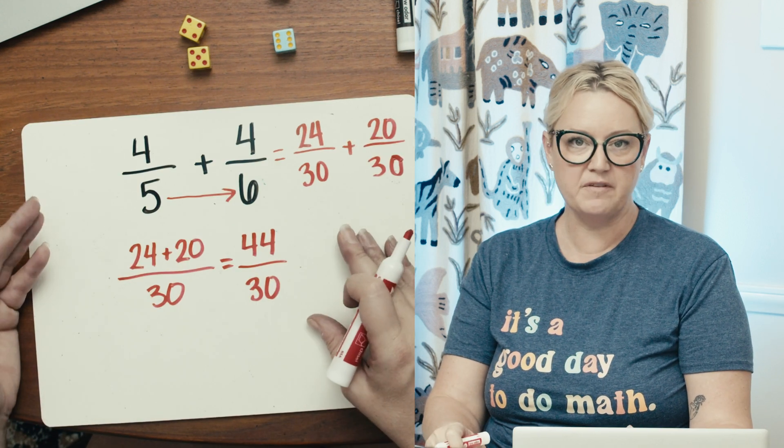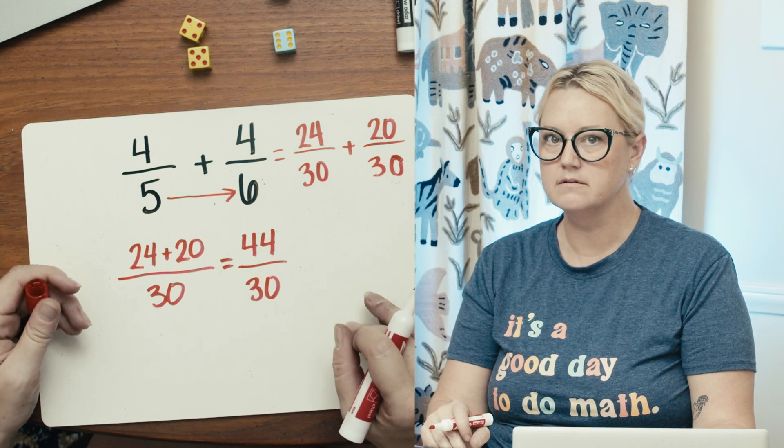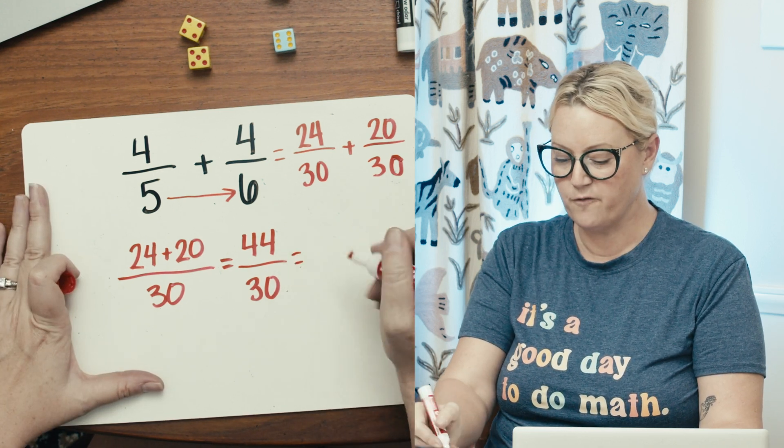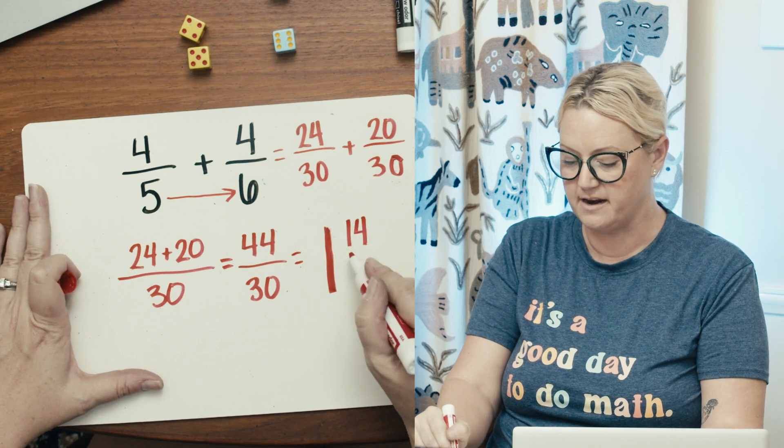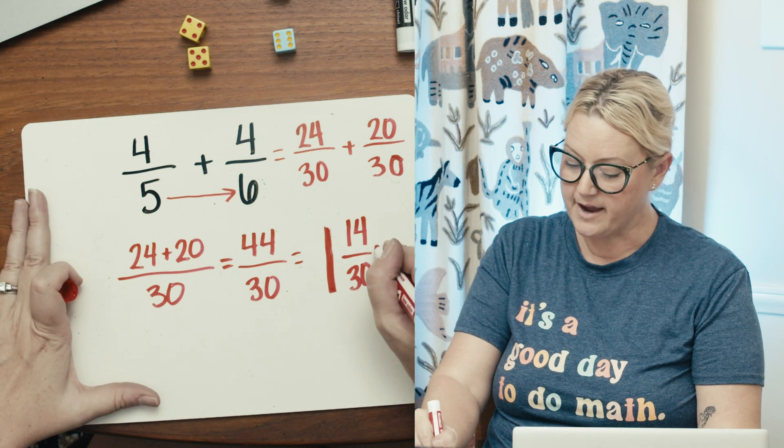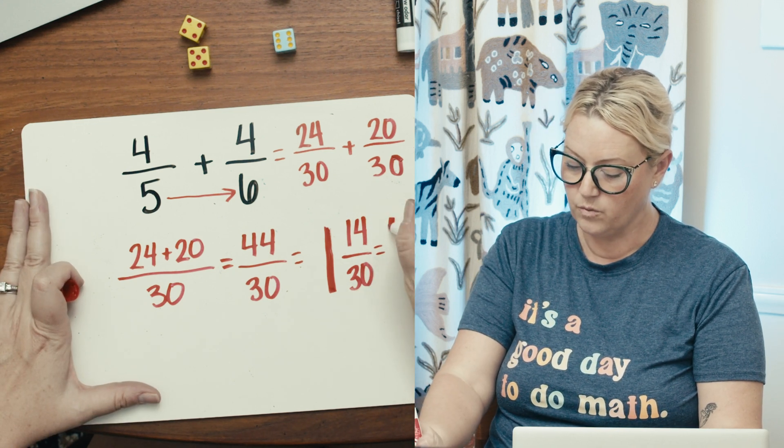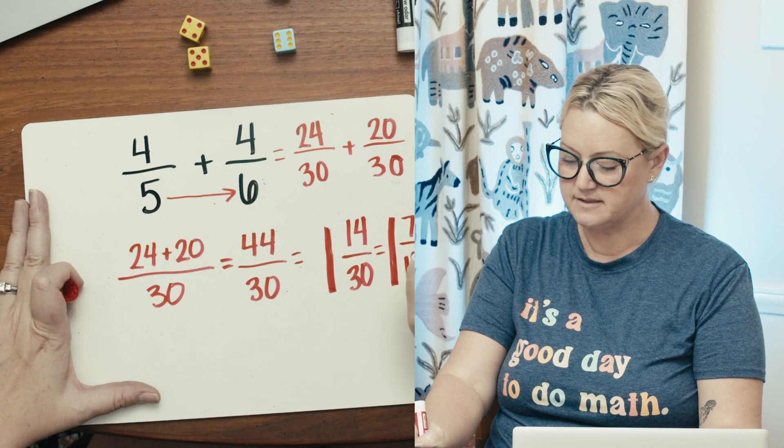Again, I could simplify here, but I like simplifying last. It's not wrong. It's just different. So 30 into 44 goes one whole time. And then I'm left over with 14 over 30. 14 and 30 are both divisible by two. So I can simplify this to one and seven fifteenths.